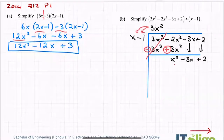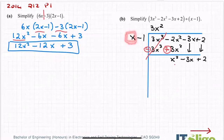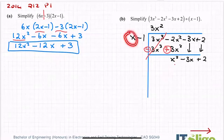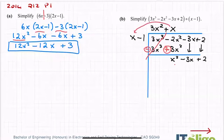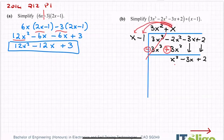Then you add the rest: minus 2 plus 3 gives 1x squared. Take down the minus 3x, and take down the plus 2. Then you do the exact same thing again. What do I multiply by x to bring it up to x squared? That's another x, because x by x is x squared. Then just like before, you multiply x by the x and x by the minus 1. So x by x gives me x squared, and x by minus 1 gives me minus x.